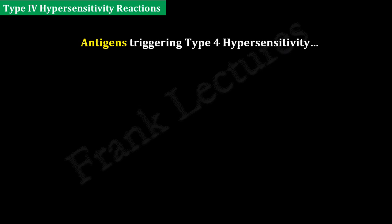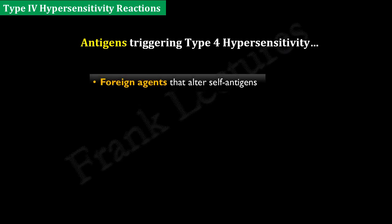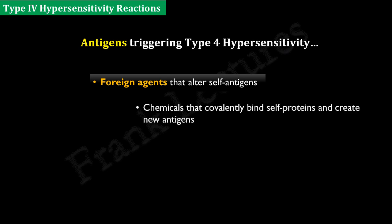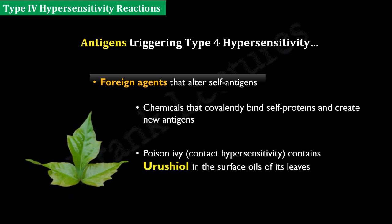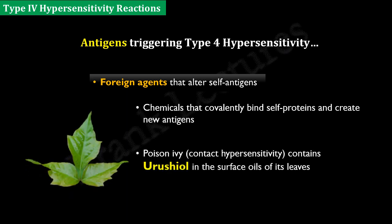Antigens triggering these reactions can be foreign agents that alter self-antigens once inside the body. These are basically chemicals that covalently bind to normal glycoproteins present on skin cells. An example of such a chemical is urushiol, which is present in the surface oils of the leaves of poison ivy, causing contact hypersensitivity.